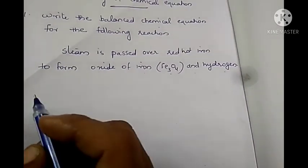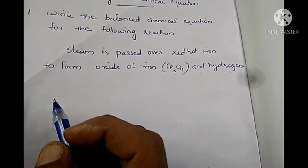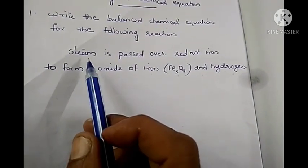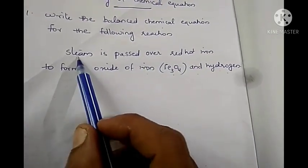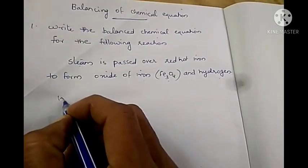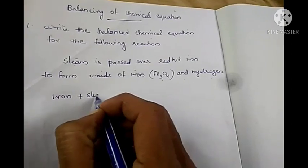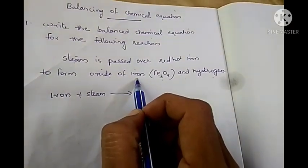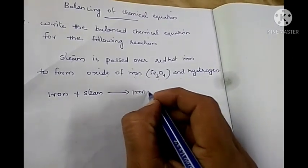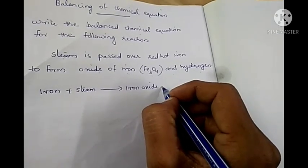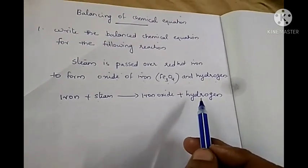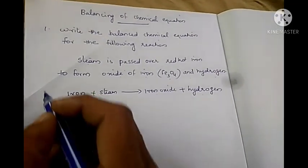Step 1: If a reaction is given like this, first we have to write the word equation of this reaction. We have to write the reactants on the left hand side and the products on the right hand side. The reactants are steam and iron. Steam is the gaseous form of water. Iron is reacting with steam to form oxide of iron and hydrogen. So iron oxide and hydrogen are the products. This is the word equation.